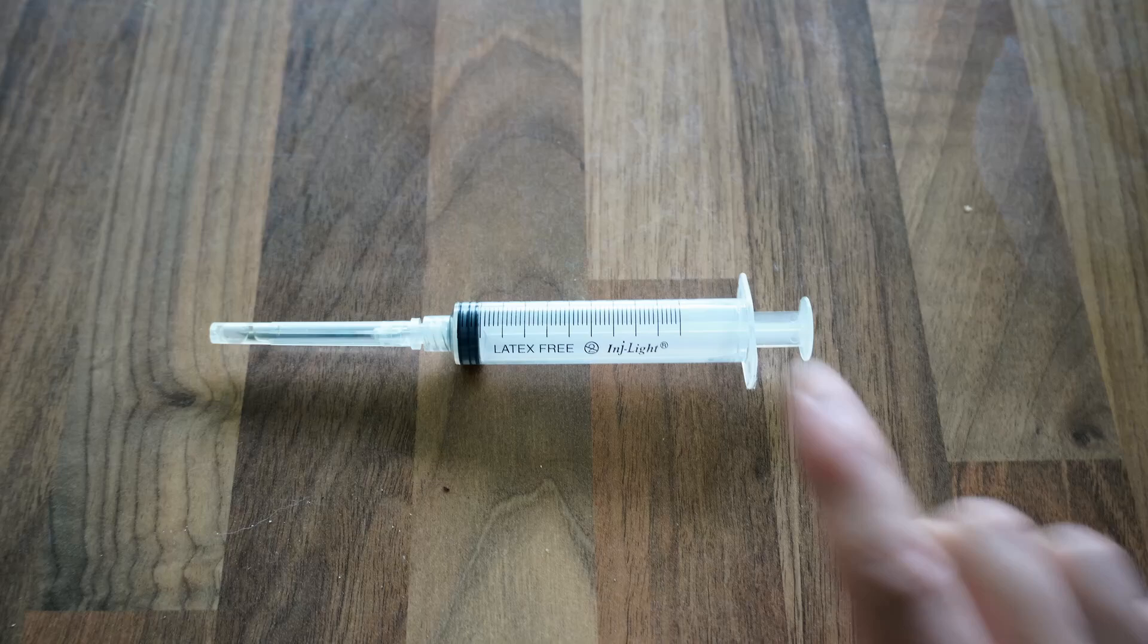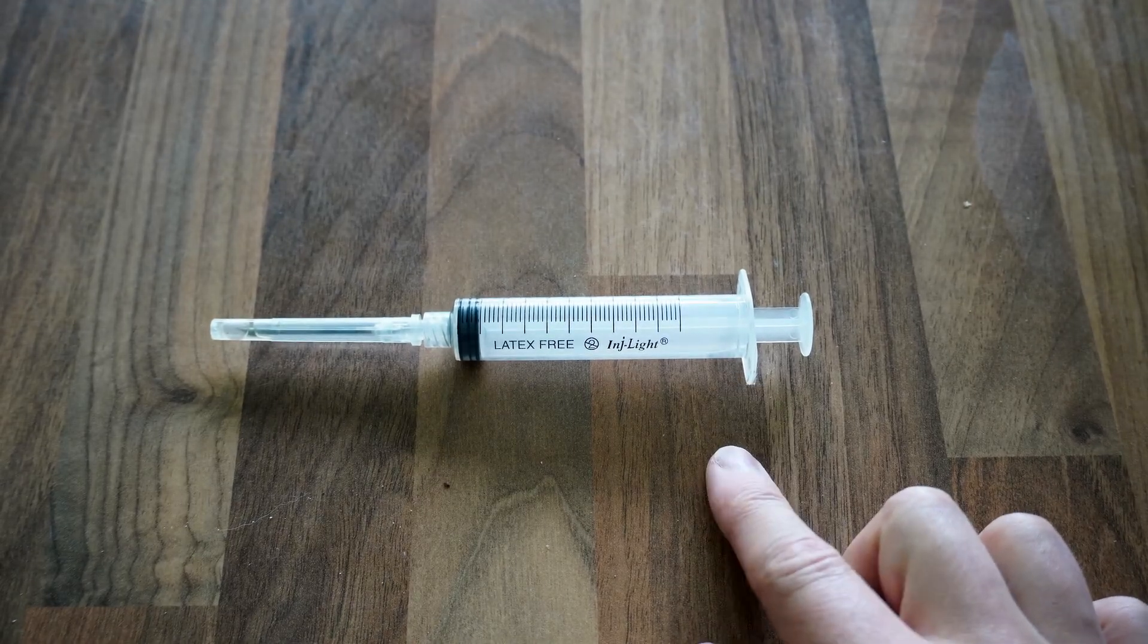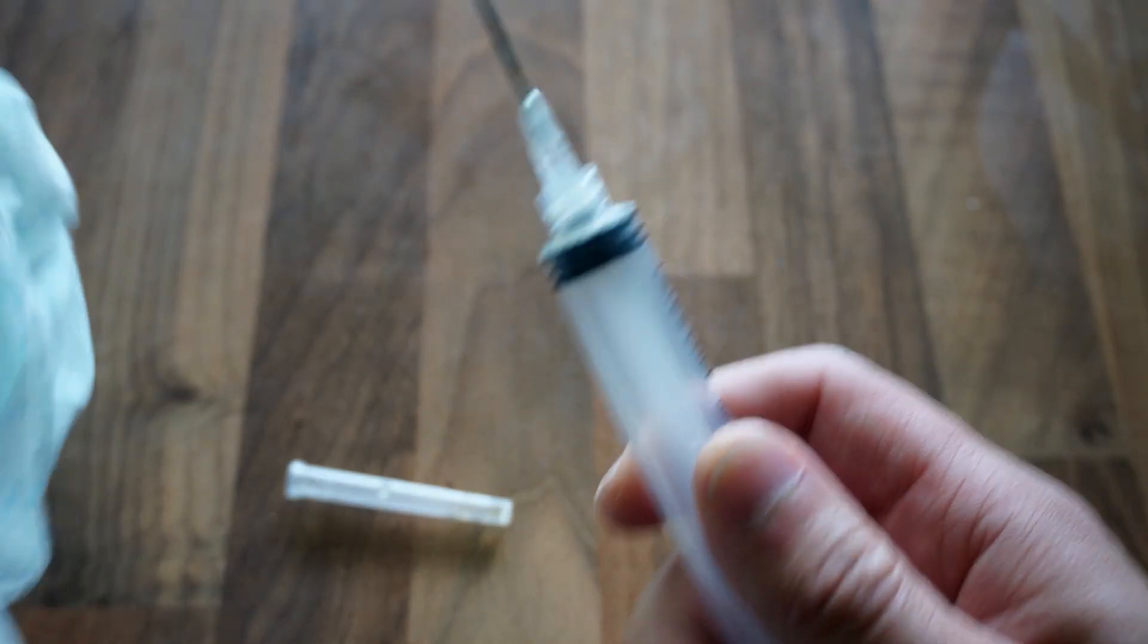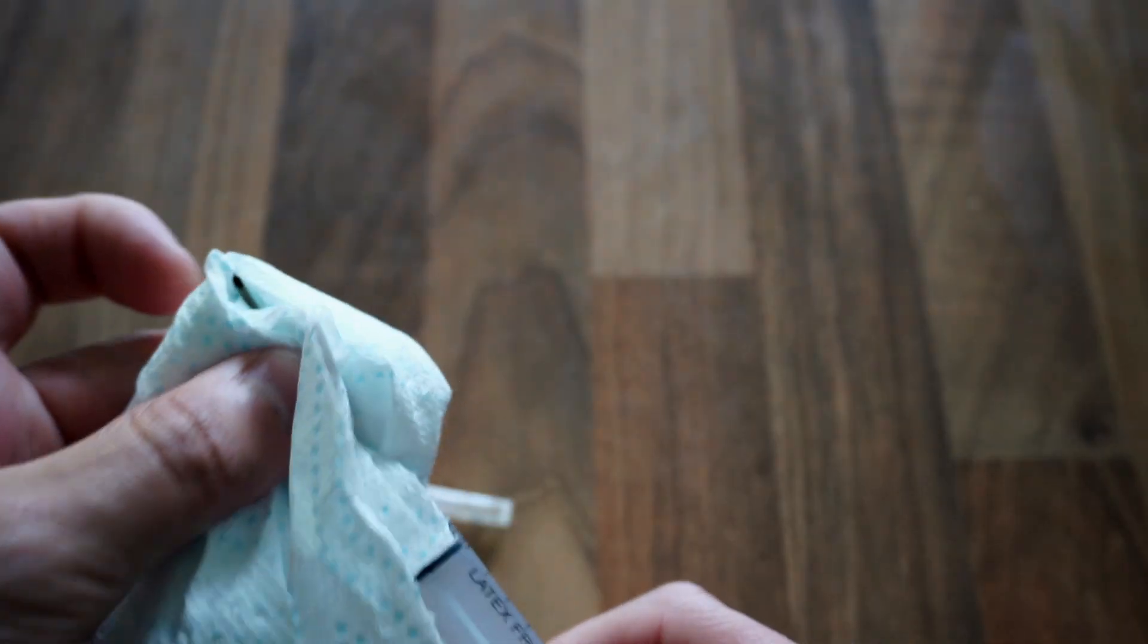I'm going to be starting off with a syringe which has already been used and I'll show you how to sterilize the syringe. First just give the needle tip a wipe down to get any debris off it.